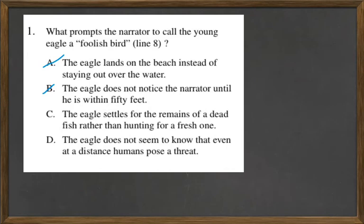Option C: the eagle settles for the remains of a dead fish rather than hunting for a fresh one. There's nothing about it hunting or getting fish, so that by elimination leaves D: the eagle does not seem to know that even at a distance, humans pose a threat. It went up in the tree at 40 feet, allowed him to walk even closer, but he could have easily shot it right underneath the tree. So the answer is D.